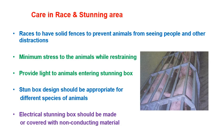Care in the race and in the stunning area: the race is the connection from the lairage to the slaughter hall, through which animals reach the stunning area. Races should have solid fences to prevent animals from seeing people and other distractions. Animals remaining in the lairage should not see other animals being slaughtered. Minimize stress while restraining. Provide light to animals entering the stunning box. The stunning box design should be appropriate for different species, and electrical stunning boxes should be made of non-conducting materials.